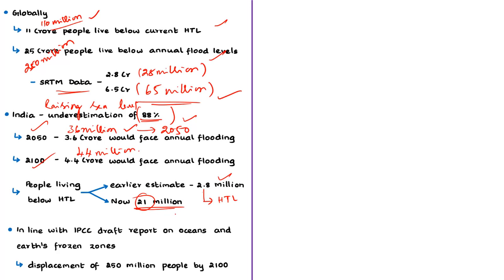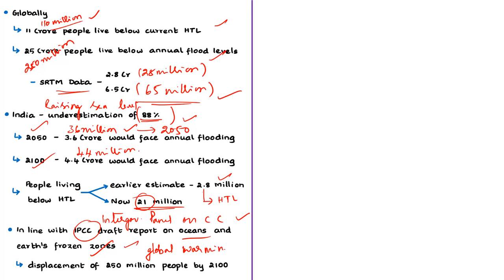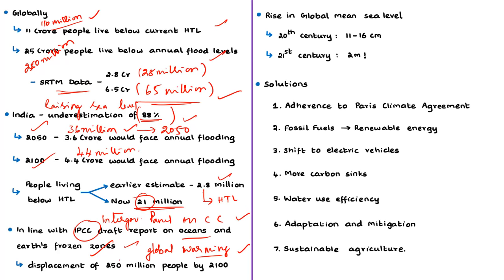This report is in line with the draft report of the Intergovernmental Panel on Climate Change (IPCC) of the United Nations on oceans and its frozen zones, published earlier this year. The report emphasized the impact of global warming on melting of glaciers and resulting floods. It mentioned that even if the world limits global warming to 2 degrees Celsius, the global ocean water line will rise enough to displace more than 250 million people before the end of this century.